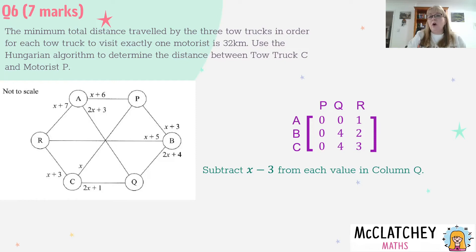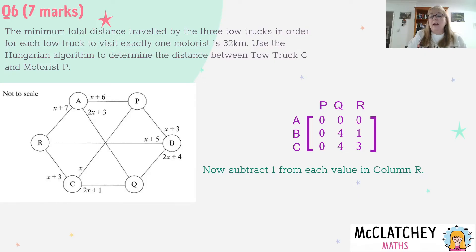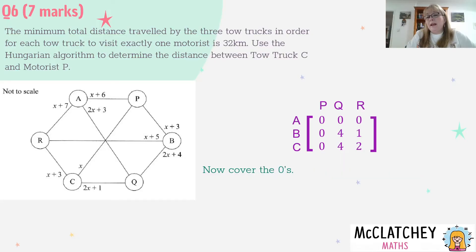Now it's time to look at column R. My smallest number there is one. I'm going to take one away from everything in that particular column. One take away one gives me zero. Two take away one gives me one. Three take away one gives me two. And that's now my column reduction done. I get my third mark out of seven.